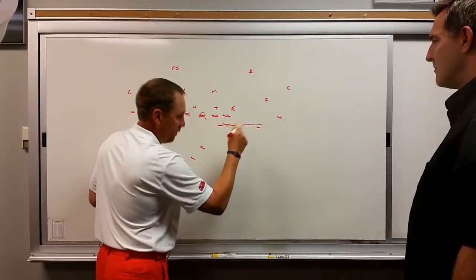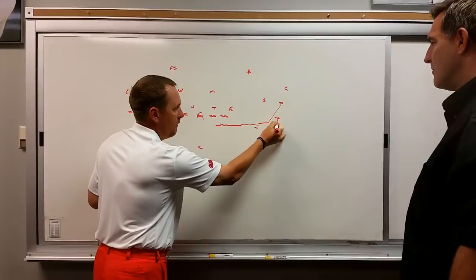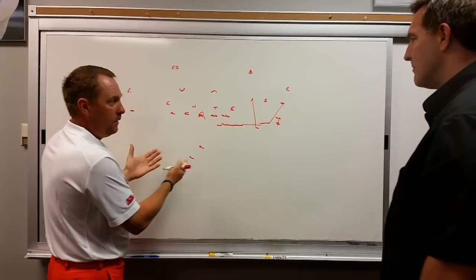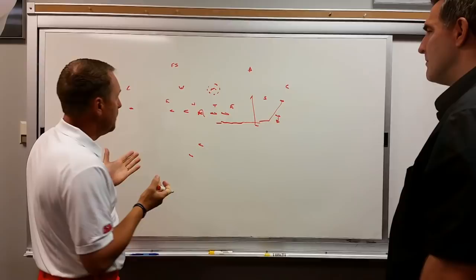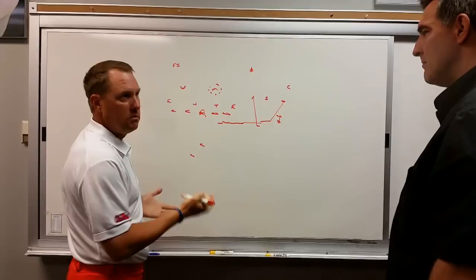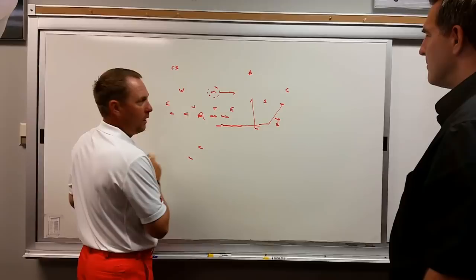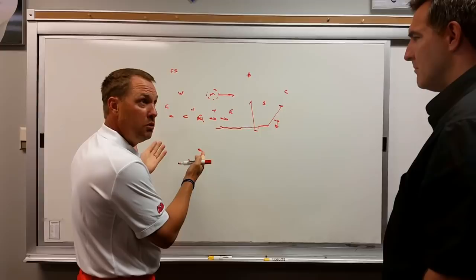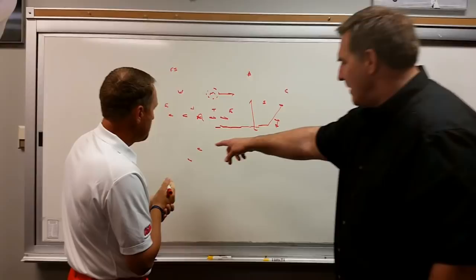When a three-man surface is created with the tight end blocking the corner, there's a hitch screen to the outside, a stick screen to the inside, and an inside zone run. The quarterback's primary read is the Mike linebacker. If the Mike wants to expand toward the stick route, the offense should just run the inside zone. If he immediately relates to the number three receiver as motion goes and gains width to take away the throw, they should run inside zone and have a numbers advantage.